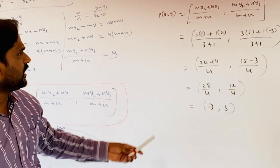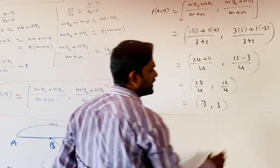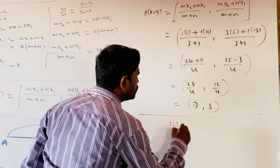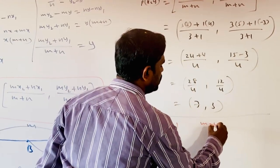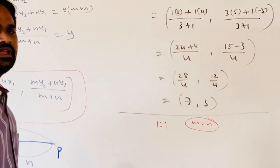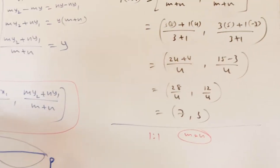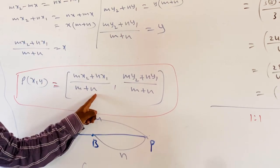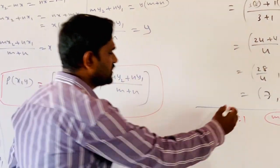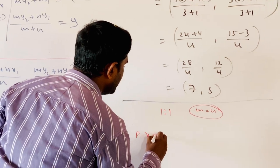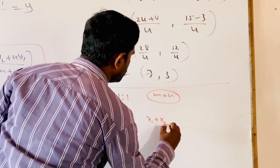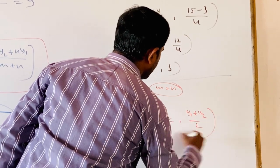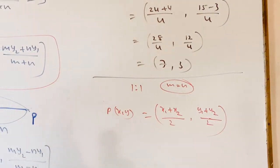If the given line segment is divided by P in the ratio 1 is to 1, where M equals N, then by substituting M equals N equals 1 in the section formula, the coordinates of P become X1 plus X2 by 2, comma Y1 plus Y2 by 2, which is known as the midpoint formula.